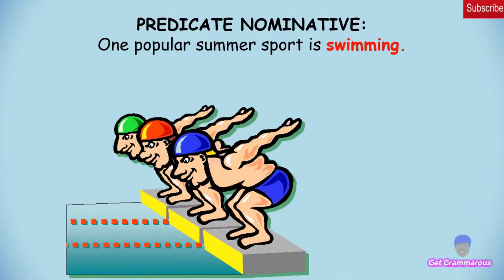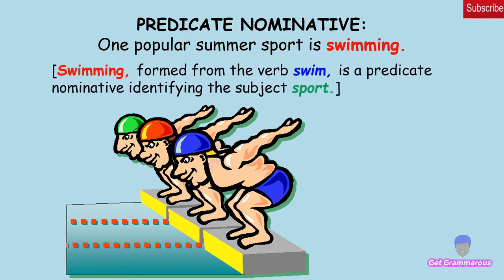A gerund used as a predicate nominative: 'One popular summer sport is swimming.' Swimming, formed from the verb swim, is a predicate nominative identifying the subject sport.